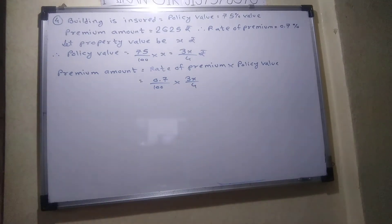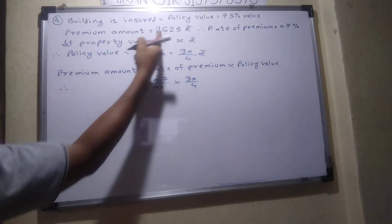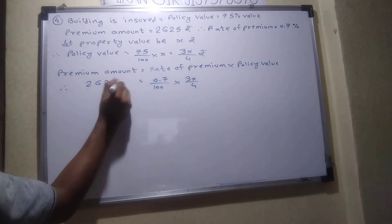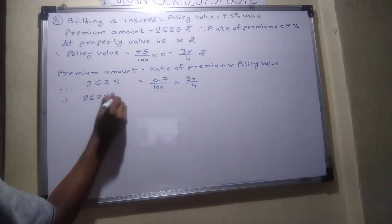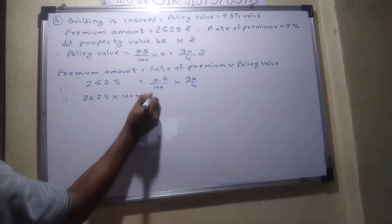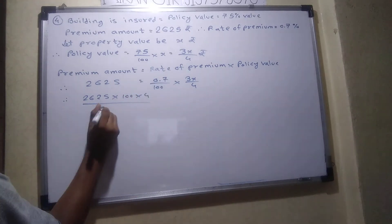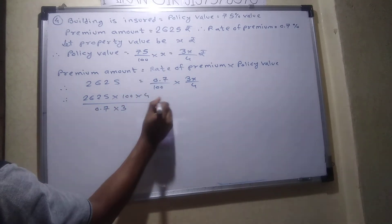So premium amount we have, that is given. What is the premium amount? 2625. So 2625 multiply by 100, multiply by 4, upon 0.7 multiply by 3, is equal to x.